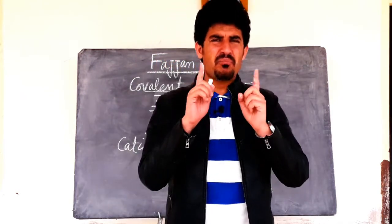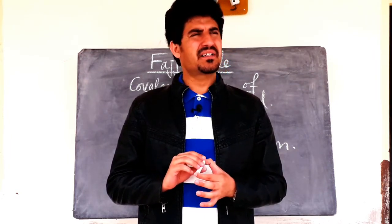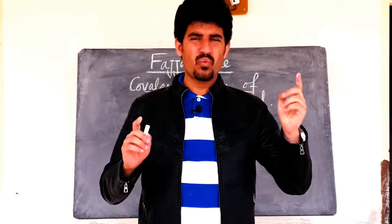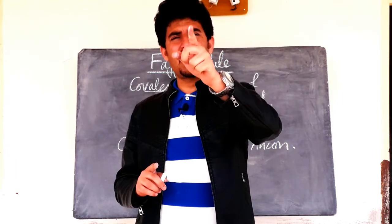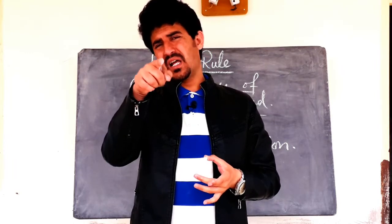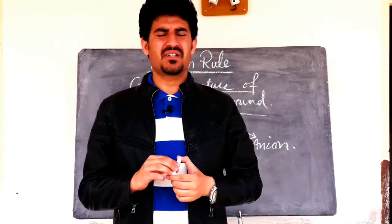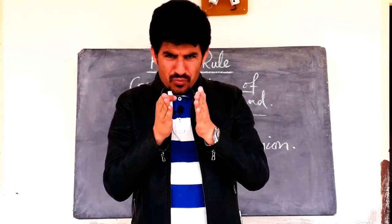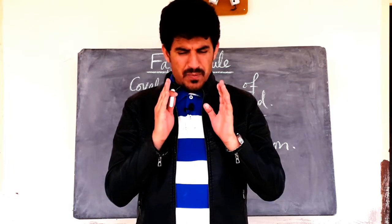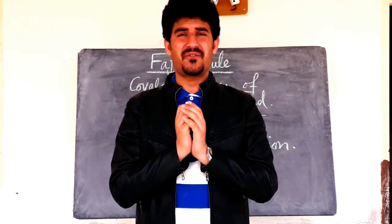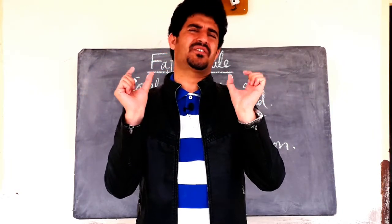For Fajan's Rule, I want to understand two words. One is called polarizing power, and the second word is called polarizability. These two words are very important. In the second year S and P block elements, these words are used in several contexts, and their use is tied to Fajan's Rule.